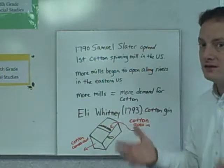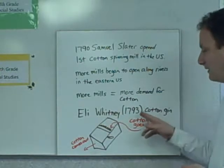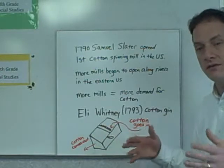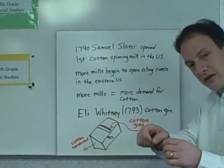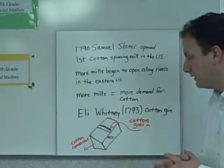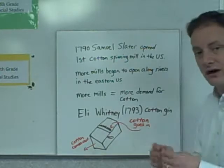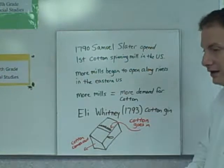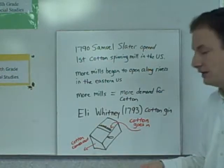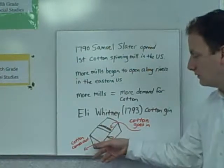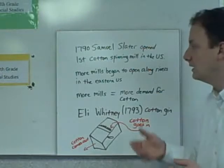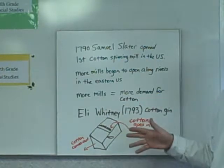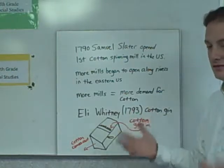Eli Whitney in 1793 didn't really like the idea of slavery. He had traveled to the South and visited a friend's plantation, and noticed that slaves were having to pick all the cotton seeds from the cotton by hand. His friend said he wished he had something to pick the cotton seed quicker. So Whitney went home and invented the cotton gin — slaves would insert the cotton, turn the crank, and the teeth would clean the seeds out. Whitney thought that if he invented this machine, maybe slavery would come to an end.